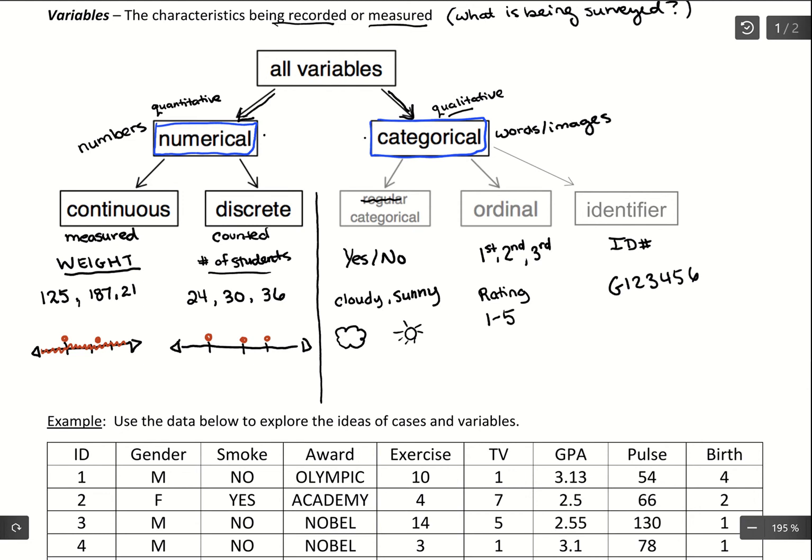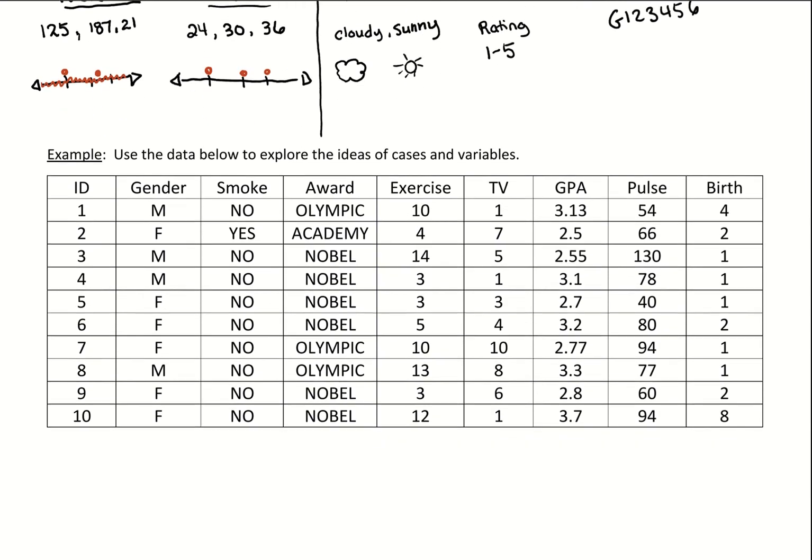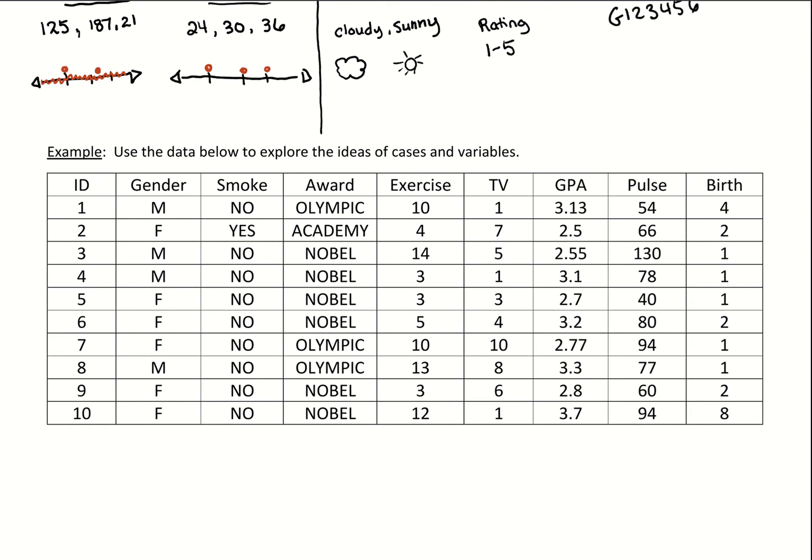So what we're going to do is look at this data down here, and we're going to talk about our variables, the types of variables, and we're also going to talk about the cases. So the cases is describing the who of the study, who was surveyed, and it typically comes across as the rows of the data, and then the variables like we talked about above is what was surveyed, what information did we collect, which is typically going to come through as the columns of the data.